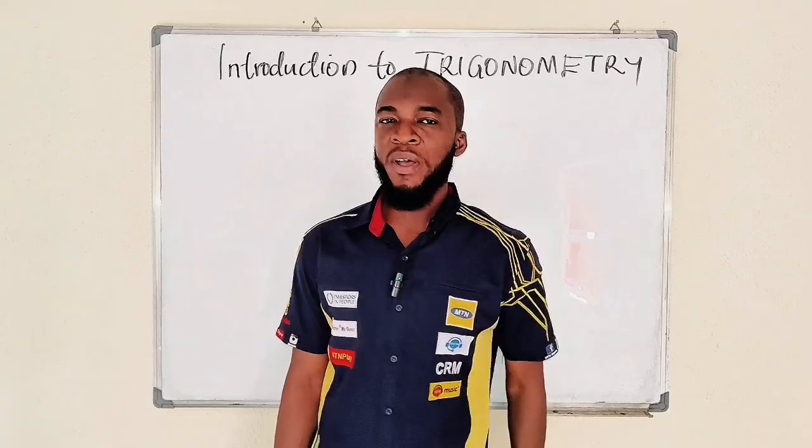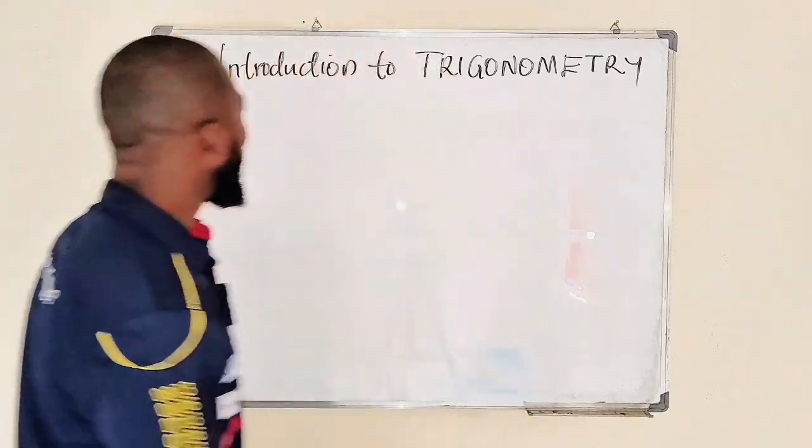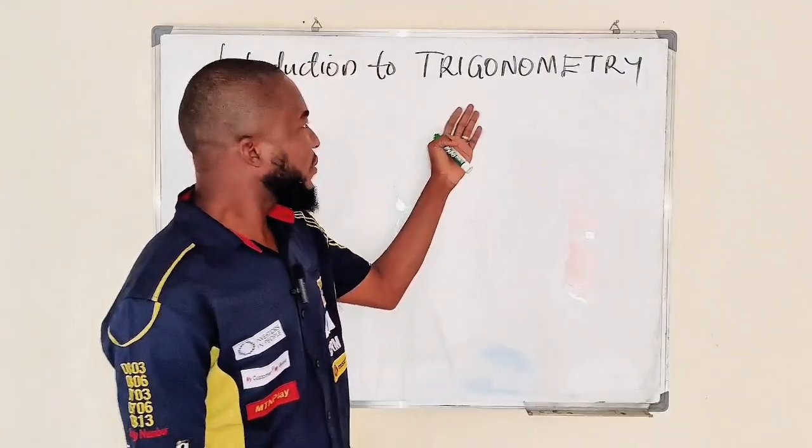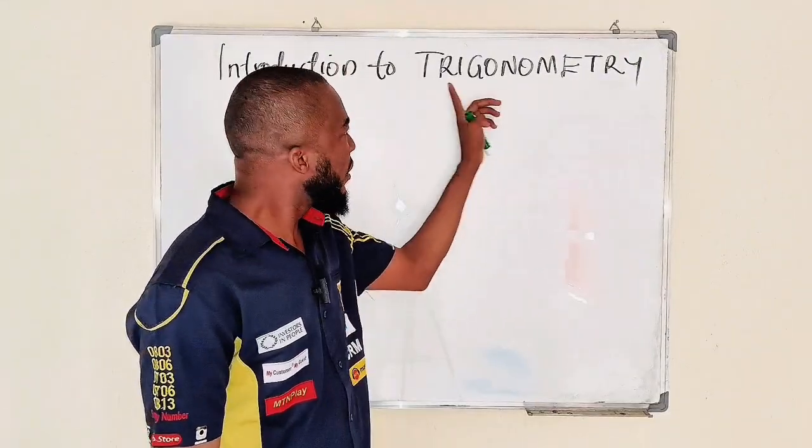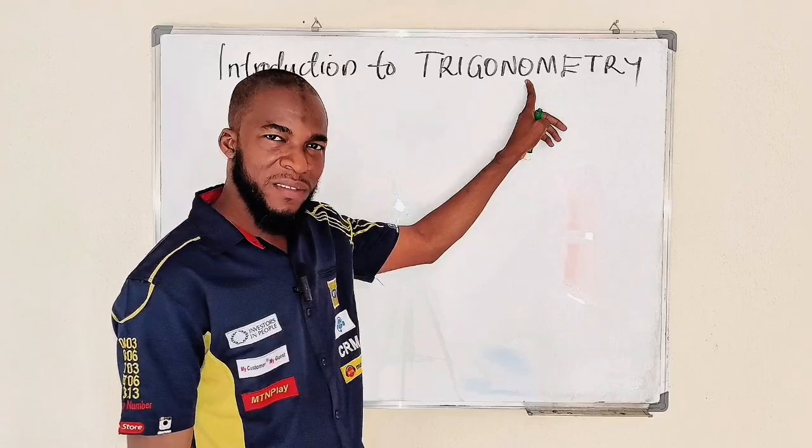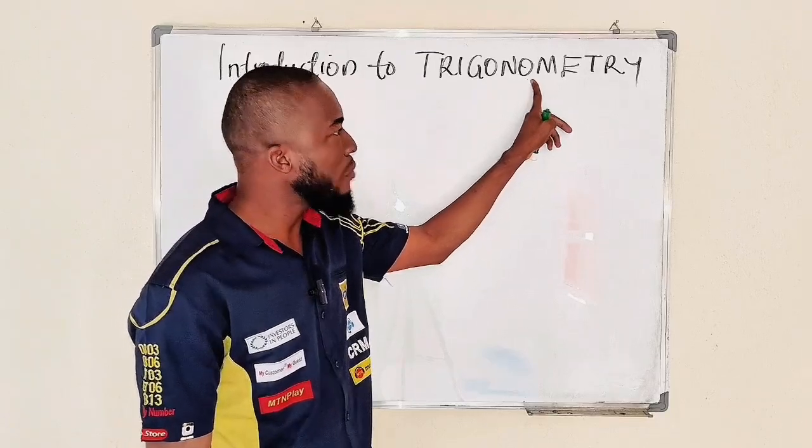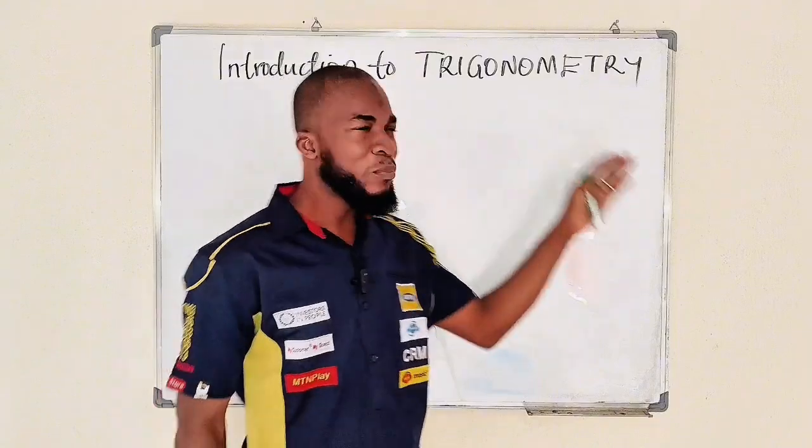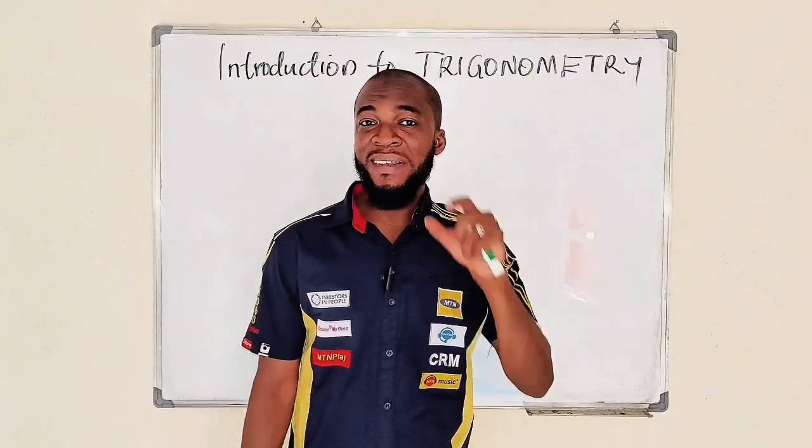Let's pay attention to the introduction to trigonometry. The word trigonometry is a Greek word. Trigonal stands for triangle and matri for measurement. So trigonometry is a branch of mathematics that deals with the study of the relationship between the side lengths and the interior angles of a triangle.